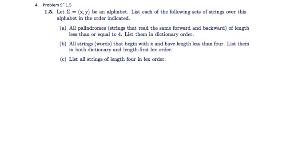In part A, we're looking at palindromes. Those are strings that read the same forward and backward, of length less than or equal to 4. List them in dictionary order. Every time I try to do dictionary order, it seems like I miss an element or two, and I have to go back and fix it. So I'm going to list the palindromes of length less than or equal to 4 first, and then I'm going to list them in dictionary order.